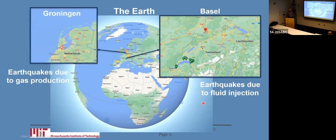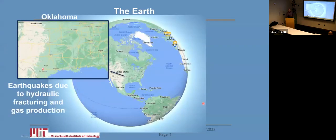Another example is the Groningen gas field. There are earthquakes due to gas production, and another example is Oklahoma.